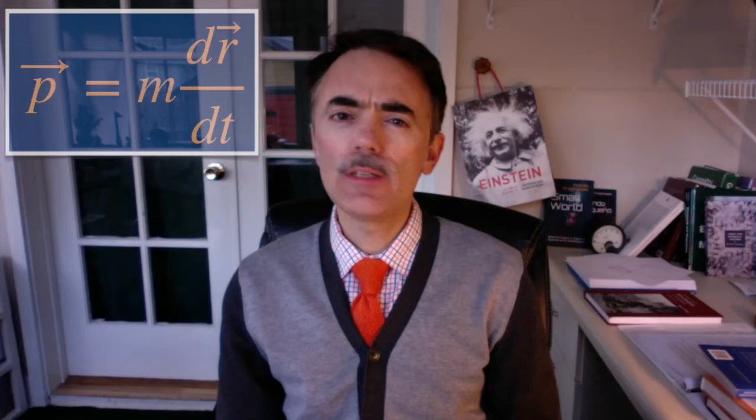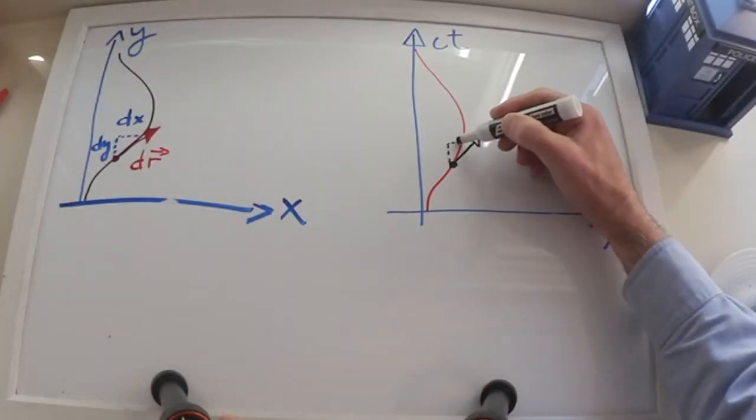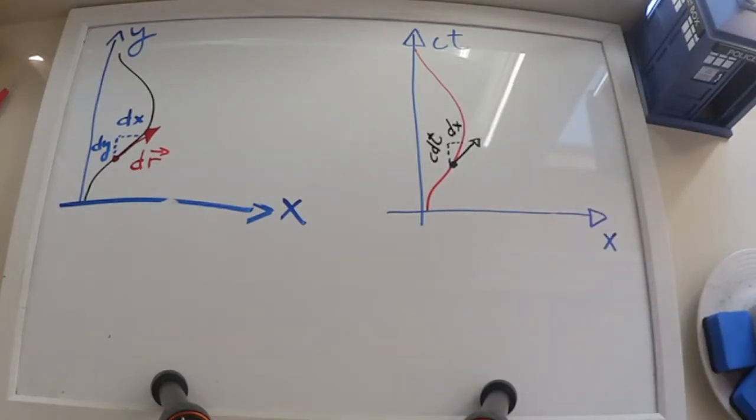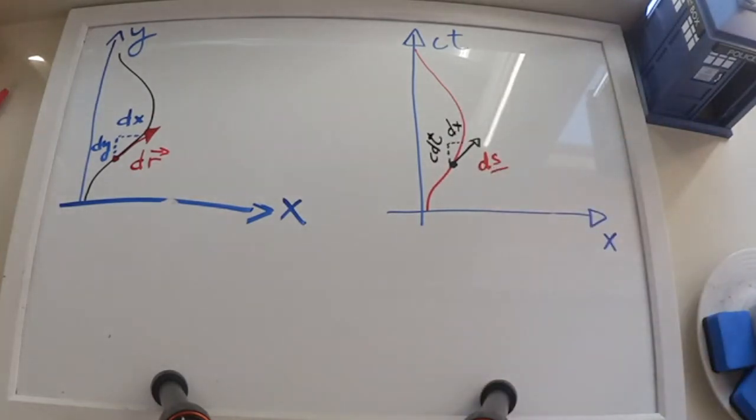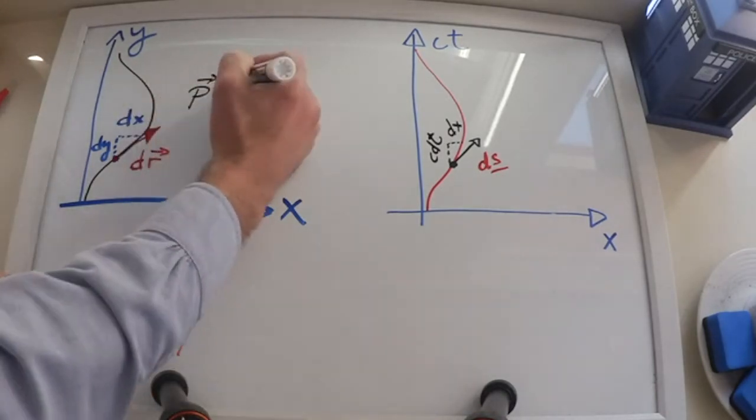Here, the differential displacement is not dr, but ds, the displacement in four-dimensional spacetime. This ds is a four-dimensional vector that has components dt, dx, dy, and dz.